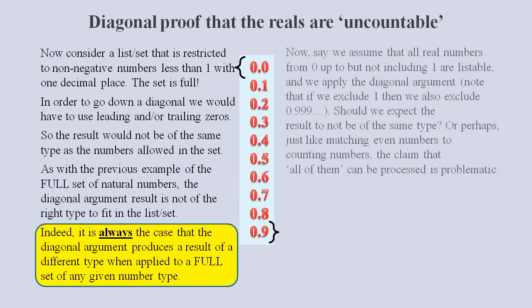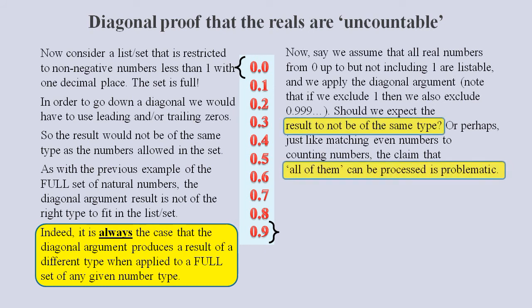But now let's assume that all real numbers from 0 up to but not including 1 are listable. If we apply the diagonal argument, should we expect the result to be of the wrong type? Who knows what really happens when we supposedly have infinitely many digits? Perhaps the result will be the wrong type. Perhaps the idea that we can process all of them is problematic. Or perhaps one or more of our assumptions may have been invalid.